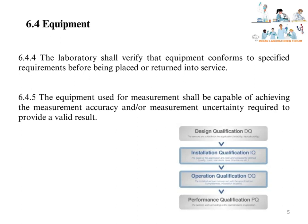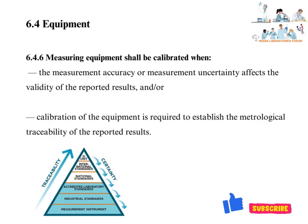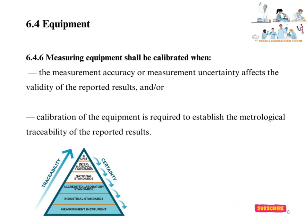Equipment used for measurement shall be capable of achieving the measurement accuracy and/or measurement uncertainty required to provide a valid result. The laboratory has to ensure that equipment used in the lab is capable of achieving the required accuracy — the closeness of the measured value to a standard or true value — and measurement uncertainty. Measuring equipment shall be calibrated when measurement accuracy or uncertainty affects the validity of reported results, or when calibration is required to establish metrological traceability.